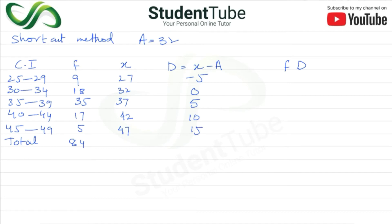Now multiply f and d: 9 × (−5) = −45; 18 × 0 = 0; 35 × 5 = 175; 17 × 10 = 170; 5 × 15 = 75. Adding these with signs gives Σfd = 375.